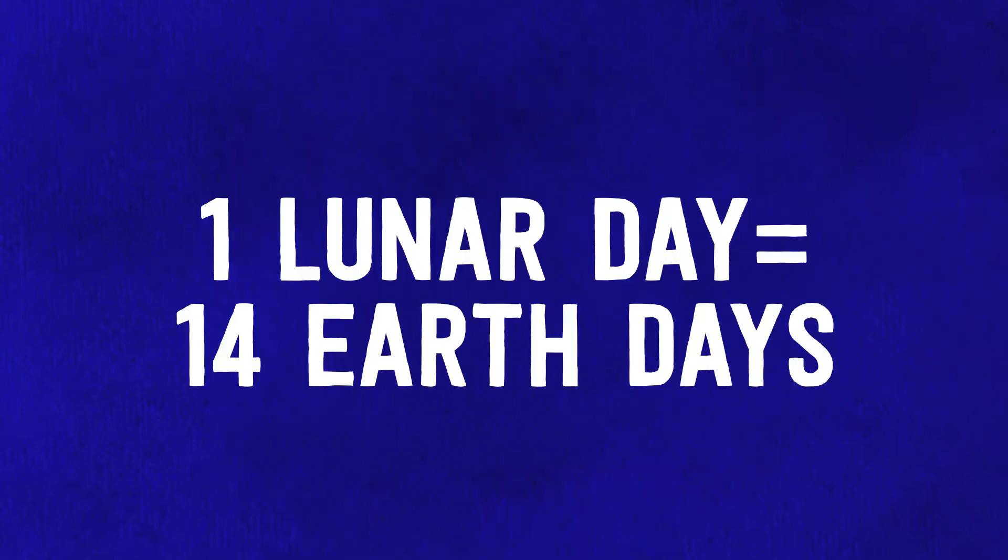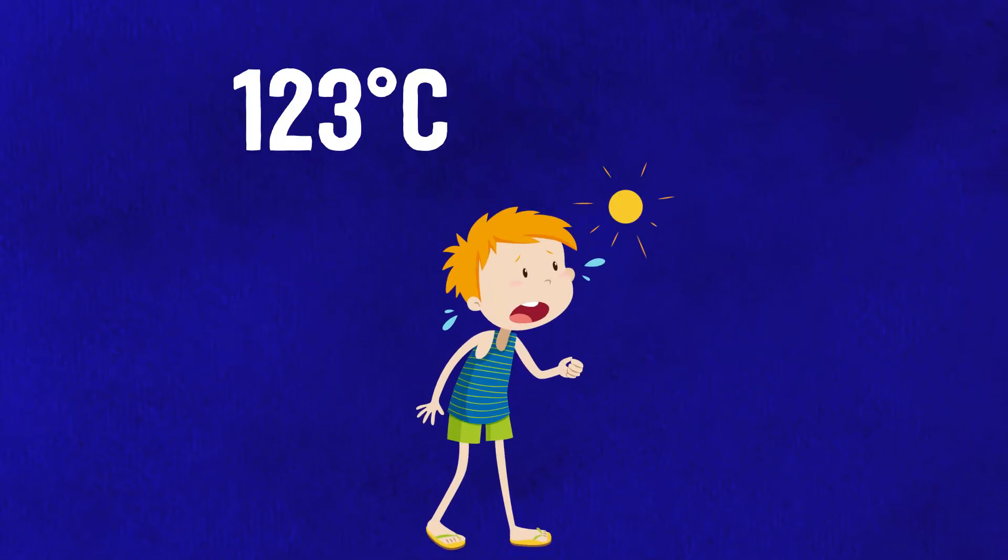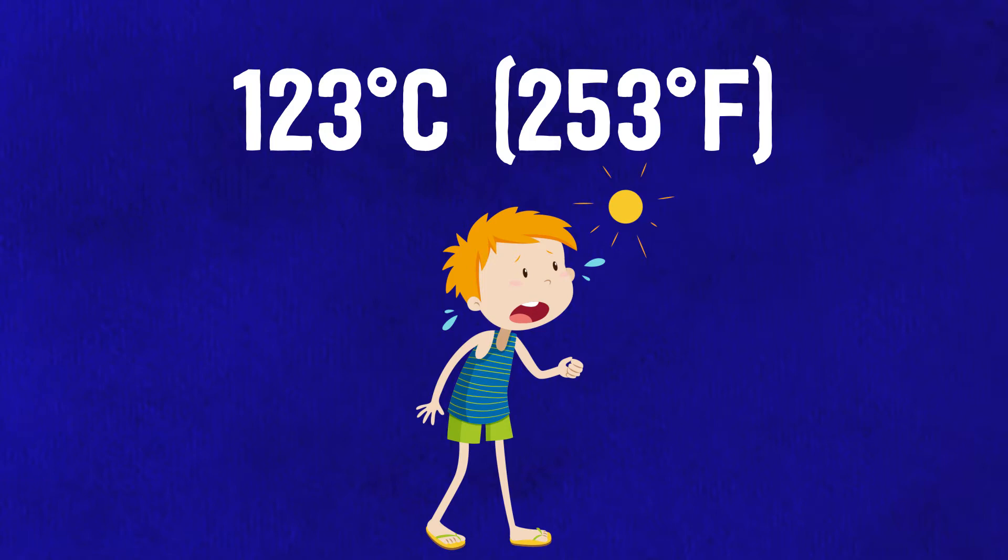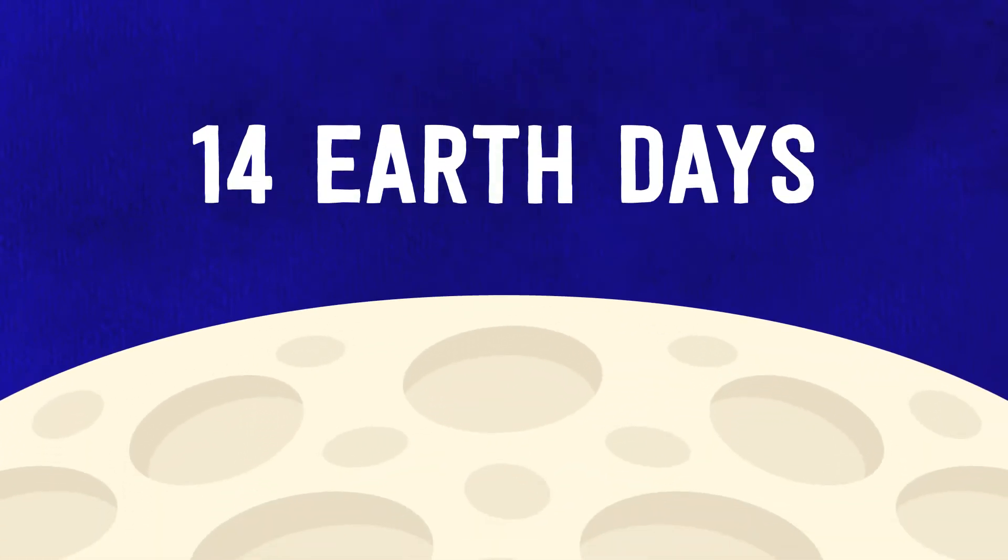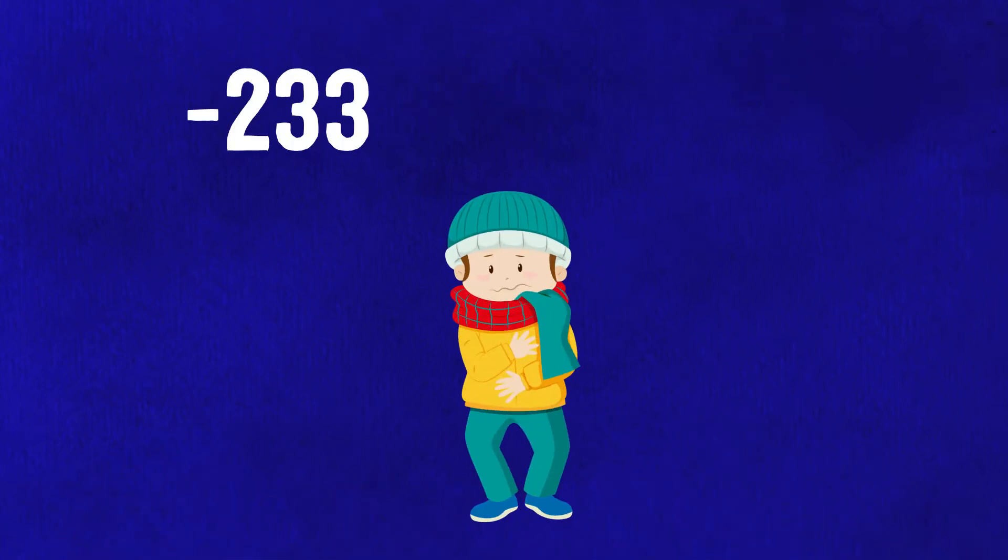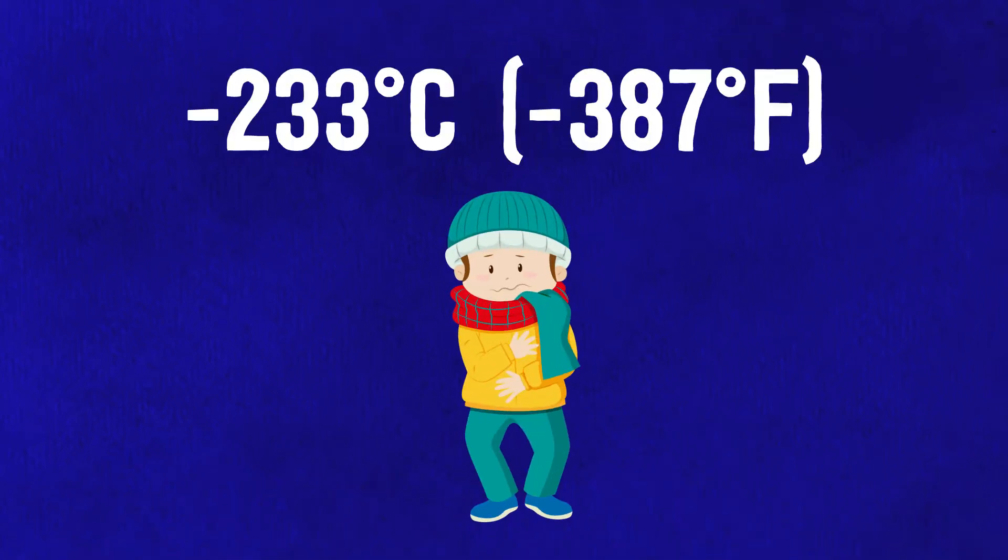Due to the moon's rotation, lunar days stretch for about 14 Earth days, with average temperatures of 123 degrees Celsius or 253 degrees Fahrenheit, while lunar nights also last 14 Earth days and maintain a frigid cold temperature of negative 233 degrees Celsius or negative 387 degrees Fahrenheit.